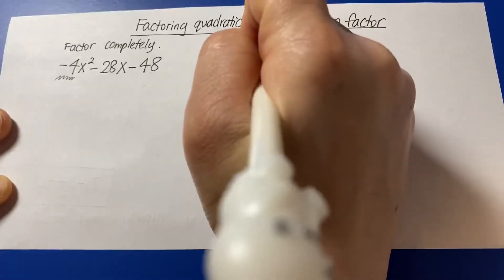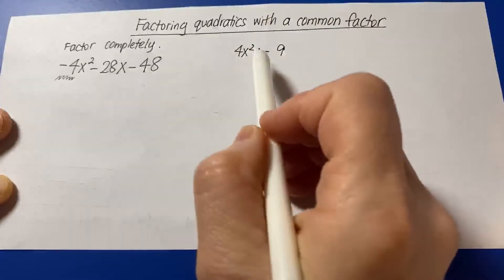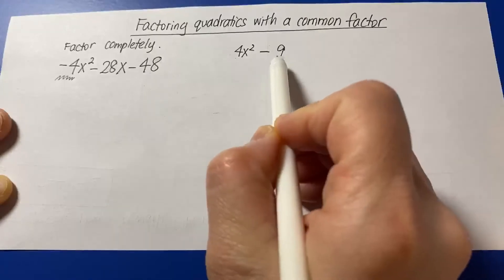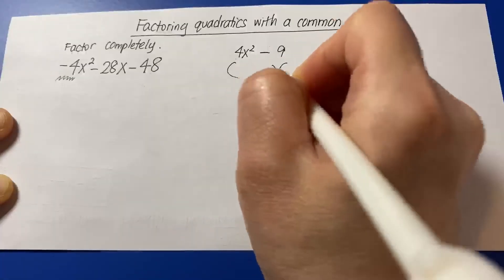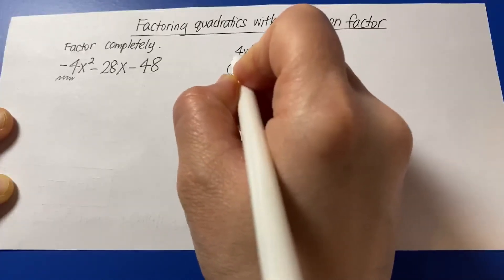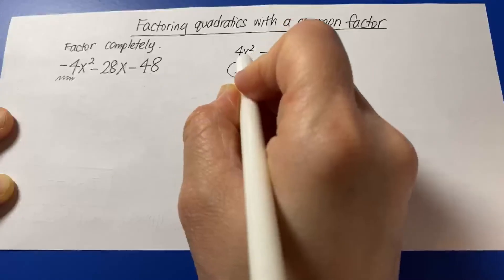Just a quick review, difference perfect squares look something like this, where there's a difference in between, and each term is a perfect square. So for example, what two perfectly the same multiply to give you 4x squared? 2x times 2x gave us 4x squared.